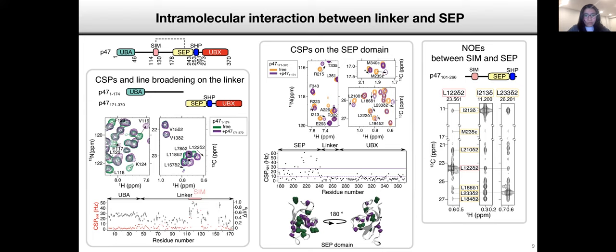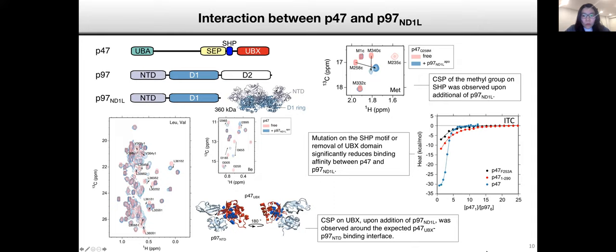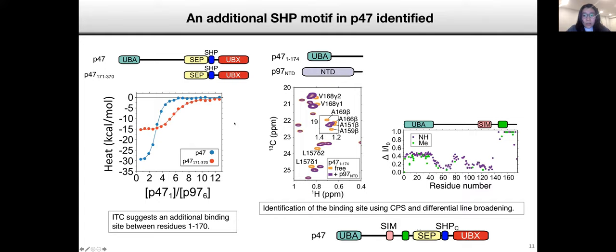When we were investigating P47 by itself, we found that this intrinsically disordered linker actually contained a conserved motif, which we call SIM, that interacts with the middle SEP domain. We can see chemical shift perturbations on both the linker and the SEP domain. Due to this intramolecular interaction, the structure of P47 is actually more compact than what we previously thought.